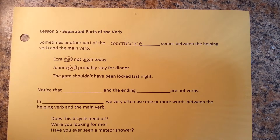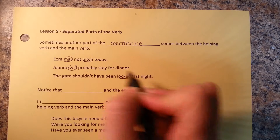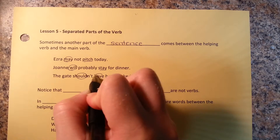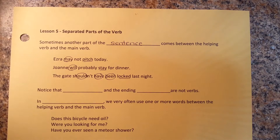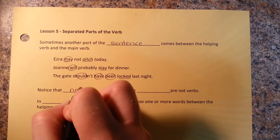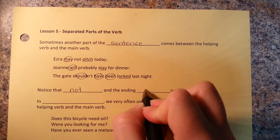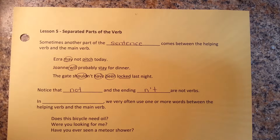The gate shouldn't have been locked last night. Locked is my main verb, and should, have, and been are all helping verbs. Notice that not and the ending n't are not verbs.